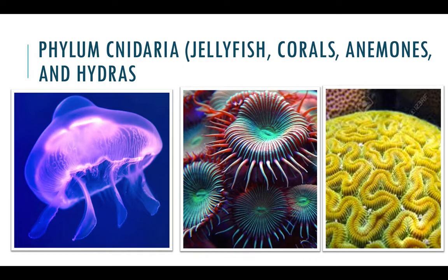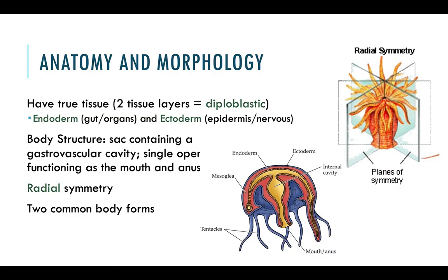Now we're going to talk about phylum Cnidaria, which includes jellyfish, corals, sea anemones, hydras, and sea fans. Cnidarians in general have two true tissues. If an organism has two tissue layers, that means it's diploblastic, and those layers are going to be the endoderm and ectoderm — so if the organism is diploblastic, it has both of those and is lacking the mesoderm. Before, sponges didn't have any tissues at all.